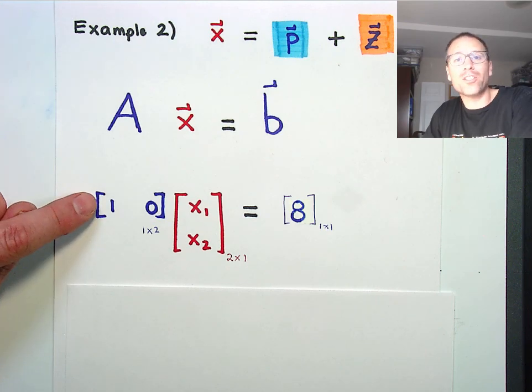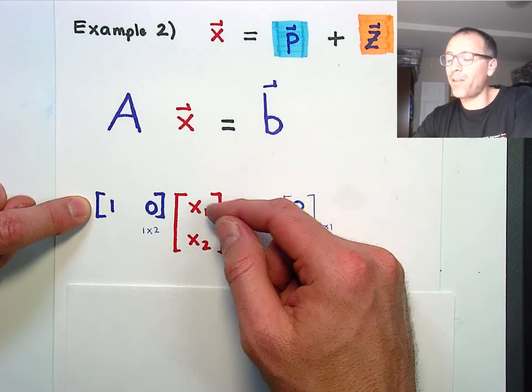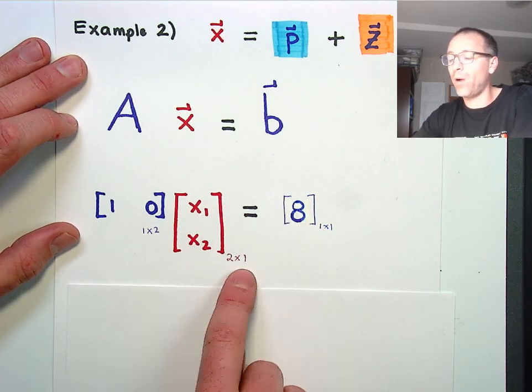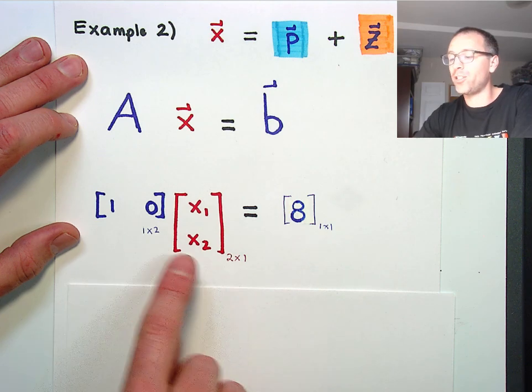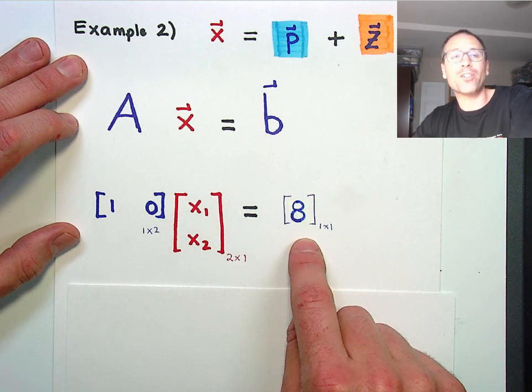Specifically, we'll look at the 1 by 2 matrix. It's a row vector, 1 comma 0. And then we'll multiply that matrix by the vector x1, x2. That's a 2 by 1. So 1 by 2 times 2 by 1, inner dimensions must agree. Those cancel out and I'm left by 1 by 1. Known right hand side vector 8.